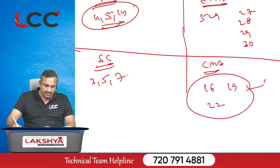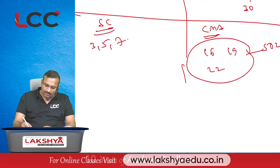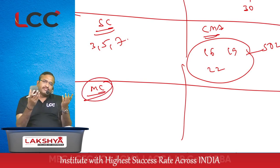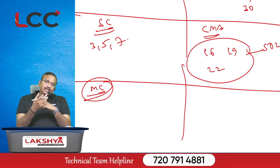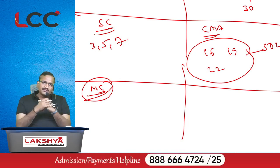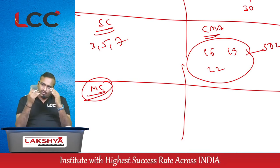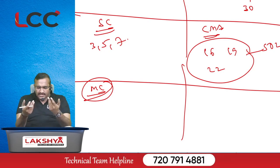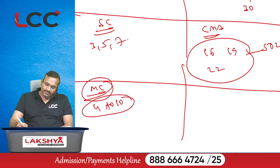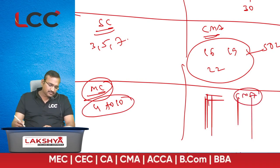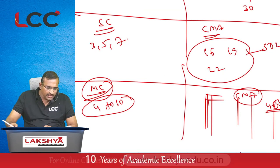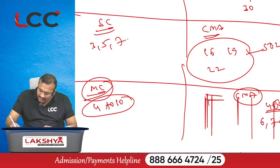Coming to marginal costing from Group 1, it is very easy if you know the basic formulas: PV ratio, contribution per unit, BEP, margin of safety, number of units to be sold for desired profit, and the concept of key factor. We can easily answer the questions. From lecture material: question number 4 to question number 10, which are very small questions. From CMA material, page number 460: questions 6, 7, and 8.